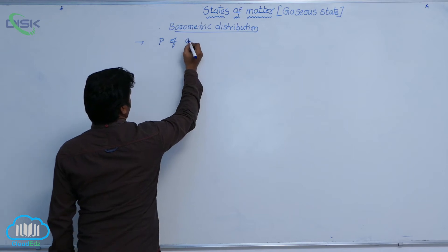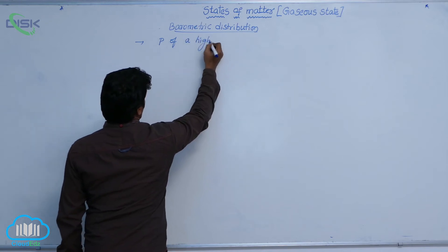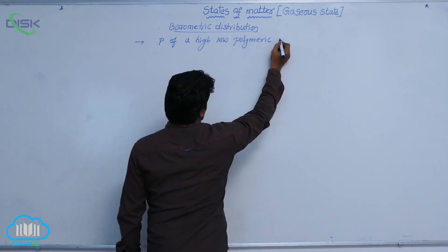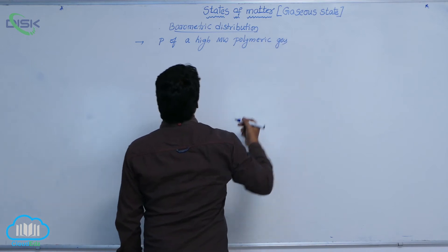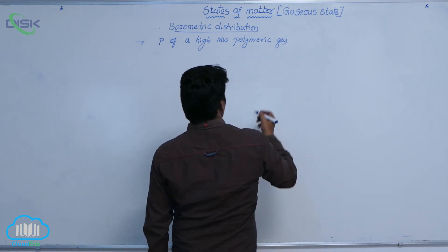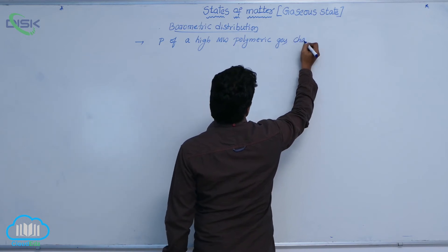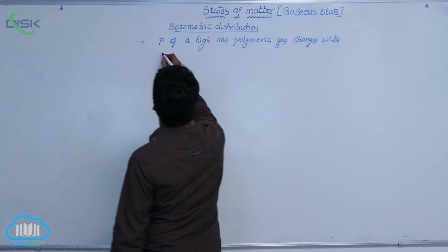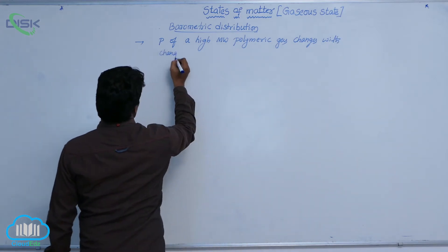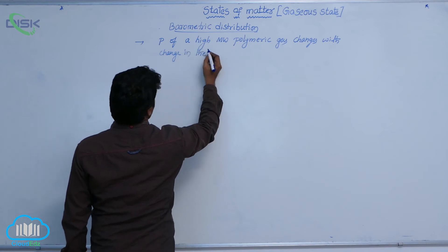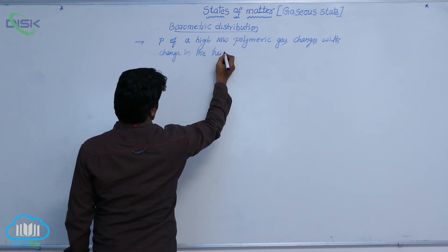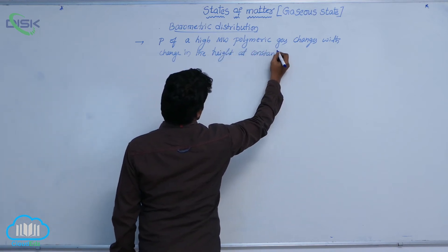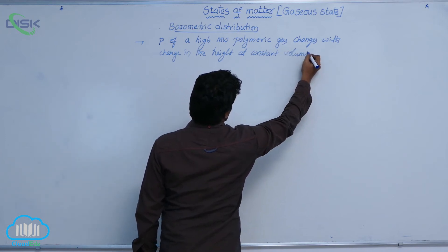So how much there is change in pressure is given by an expression. See, pressure of a high molecular weight polymeric gas changes with the change in the height at a constant volume.